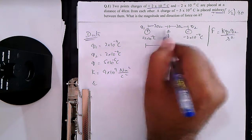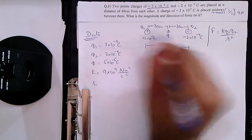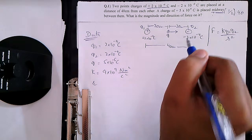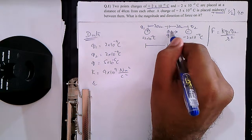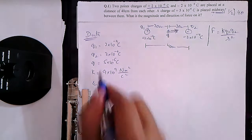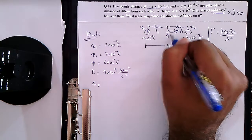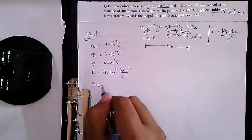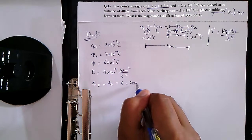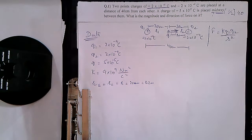R is the distance between the two charges. Since the test charge is placed midway, R1 and R2 are both equal to 20 centimeters. Convert that to meters: R1 = R2 = 0.2 meters.